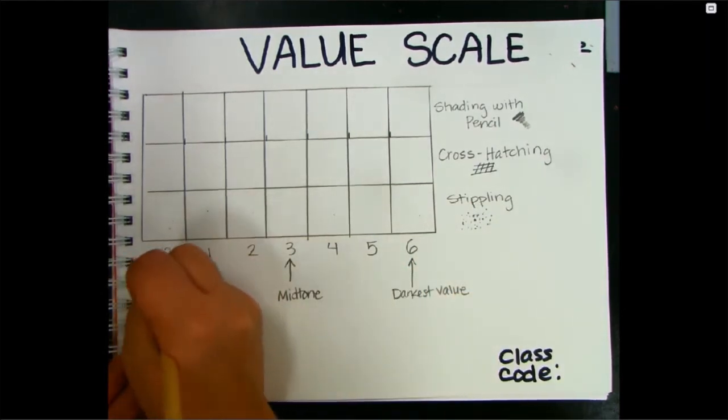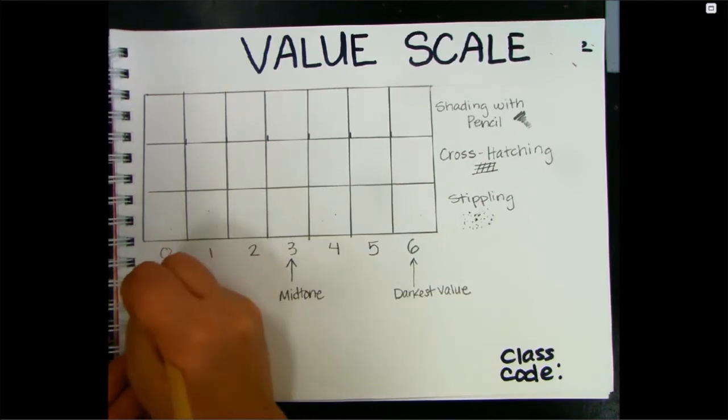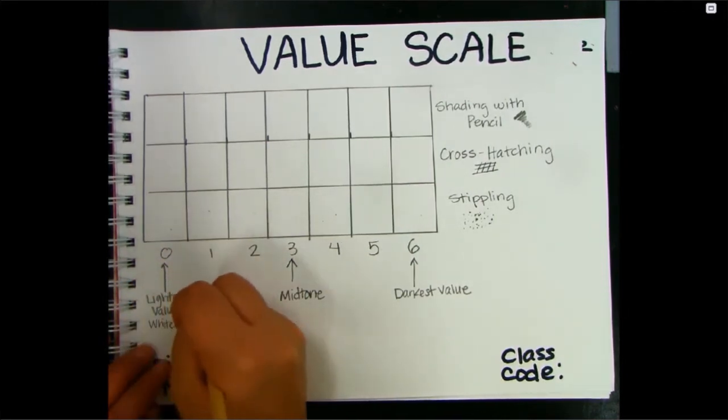Number six, write 'darkest value,' and number zero, I want you to write 'lightest value' or 'white of the paper.'